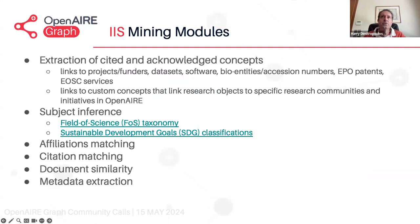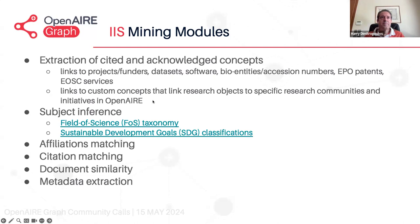IIS is a framework handling big data based on Apache Hadoop technologies. The modules that comprise IIS include different types of mining modules: modules for extracting cited and acknowledged concepts — links to projects and funders, datasets, software entities and other accession numbers, patents, EOSC services, and custom concepts linking research objects to specific research communities in OpenAIRE. There are also classifiers: the field of science taxonomy module and Sustainable Development Goals classifications. Links in the slides will be available after the talk to find more information.